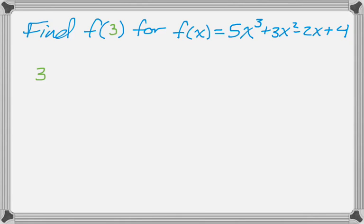So the first thing we do is we write 3, and I always say you put it in a box, but you're not really putting it in a box. Just draw that little guy right there. And now we take the coefficients: 5, then positive 3, then negative 2, then positive 4. And then we put a line.